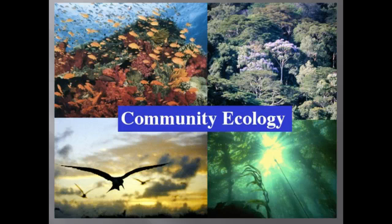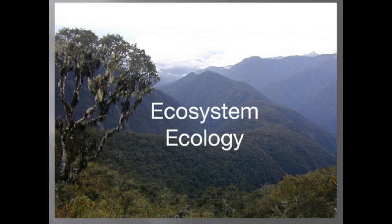A community is defined as a group of populations of different species in an area. Ecosystem ecology emphasizes energy flow and chemical cycling among the various biotic and abiotic components. An ecosystem is the community of organisms in an area and the physical factors with which they interact.